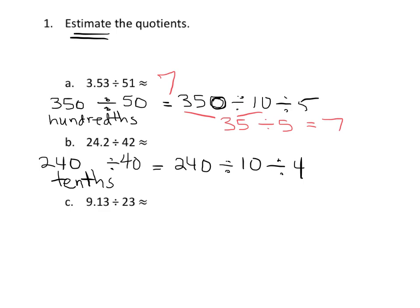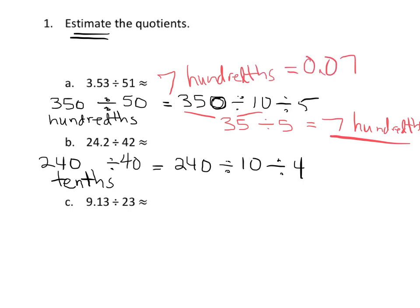I need to correct something — I dropped the label by accident earlier in problem A. That answer should be 7 hundredths, which is written as 0.07. Sorry about that — continuing the theme of doing everything in one take.